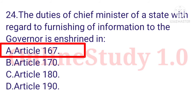Question number 24: The duties of the Chief Minister of a state with regard to furnishing of information to the Governor is enshrined in option A: Article 167.